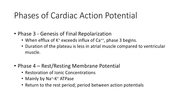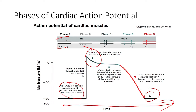Phase three is the genesis of final repolarization. It's when the efflux of potassium exceeds the influx of calcium. Phase three begins and you can see the cell membrane potential starting to return back to its resting potential of negative 90 millivolts.